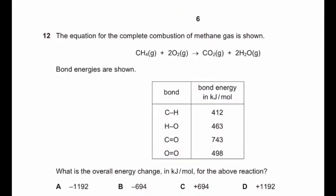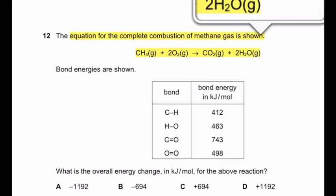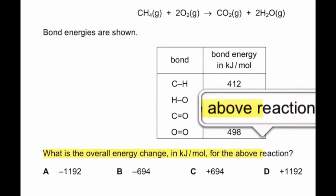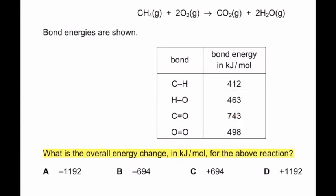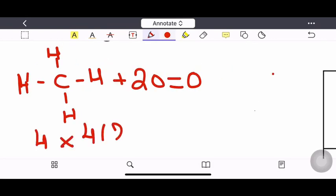Question number 12: The equation for the complete combustion of methane gas is shown. What is the overall energy change in kilojoule per mole for the above reaction? Here, we will calculate energy required to break the bonds. First, methane has four bonds of CH and there are two moles of oxygen. We will calculate the bond energy accordingly. Then calculate the energy released when new bonds are formed. There are double bonds between carbon and oxygen and CO2 contains two such bonds and there are two moles of water.